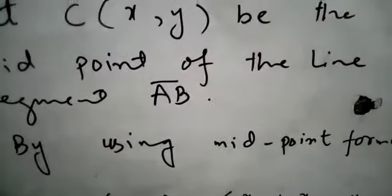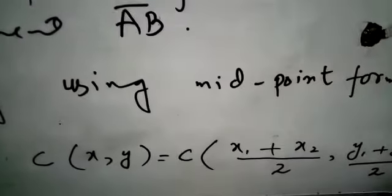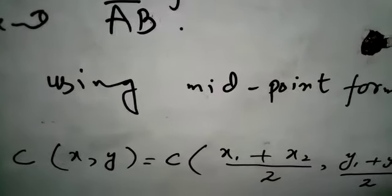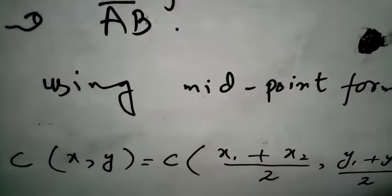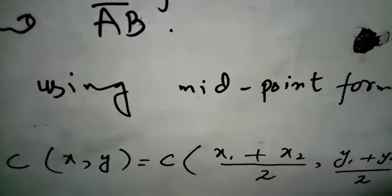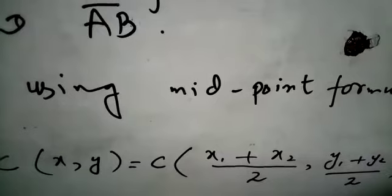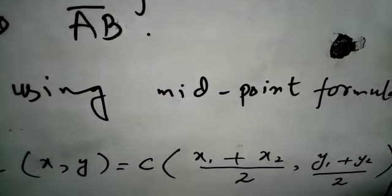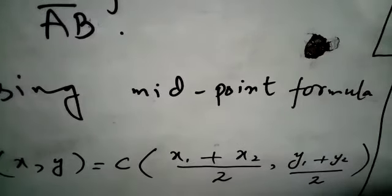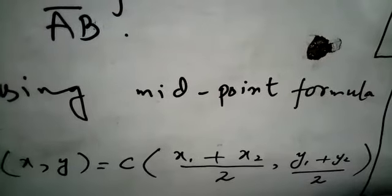By using midpoint formula, C(x, y) is equals to C, the value of X is average of the X coordinate of point A and B that is x1 plus x2 divided by 2. Similarly, for value Y, we have y1 plus y2 divided by 2.